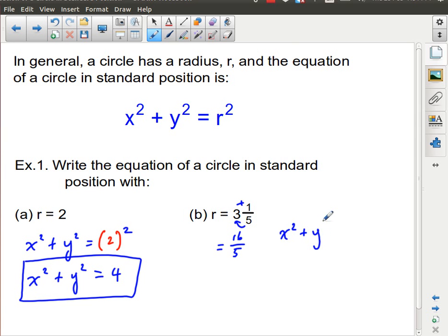And then I'm going to put that into the equation. X squared plus y squared equals, and my radius is 16 over 5 squared. So, x squared plus y squared is equal to, and that's going to be 256 over 25. And that is my equation. A little bit more awkward looking, but it's still the equation of a circle in a standard position.